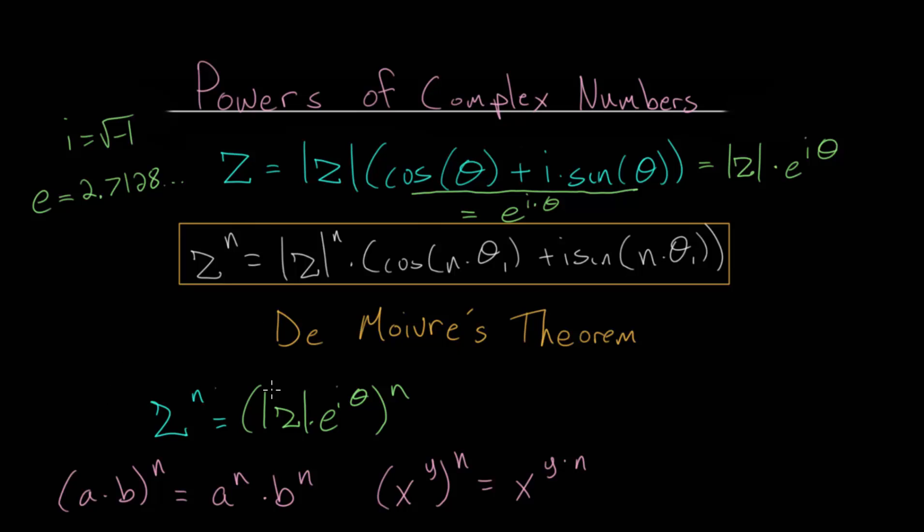And we can apply both of these ideas to our expression here. We have a product, so the nth power will go to both factors in the product. We will have the magnitude of z raised to the nth power, and we will have this e to the i times theta also raised to the nth power.